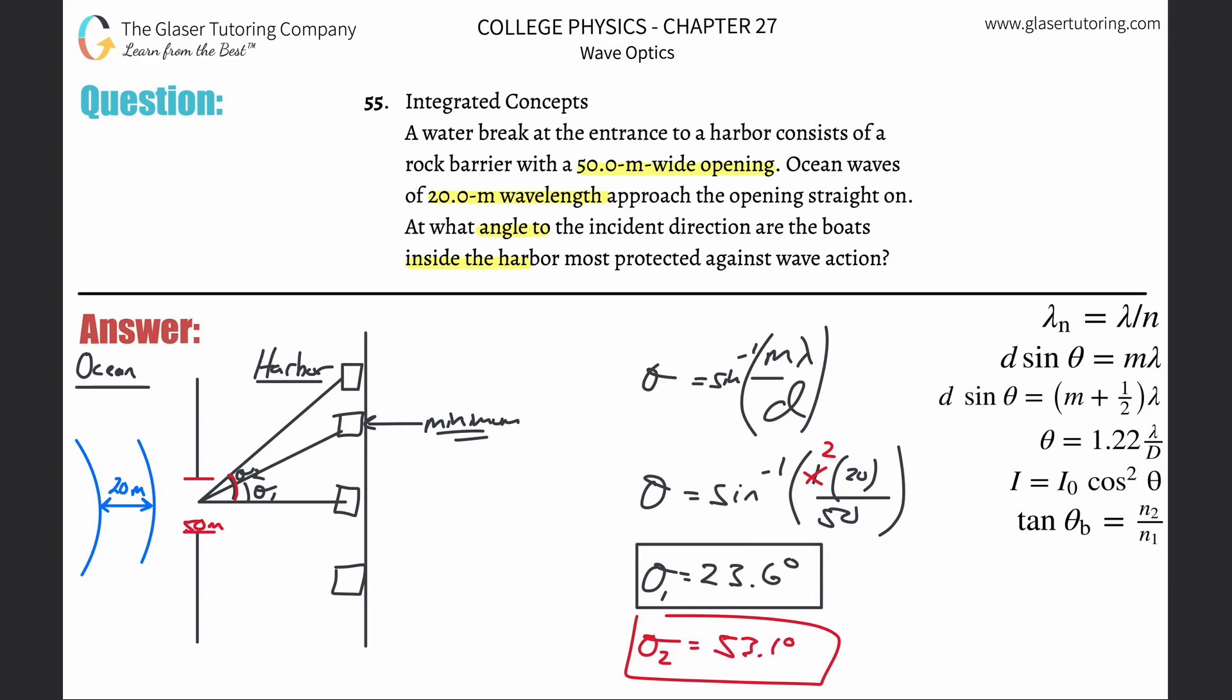Now what happens—is there a third? Well, let's calculate it. Inverse sine of three times 20 divided by 50: error. Oh boy, error. There is no third minimum. This becomes too large—it's larger than one. So what that tells us is you basically have two safe places to dock your boat: here at an angle of 23.6 degrees relative to the horizontal, and also here, which would be 53.1 degrees relative to this horizontal.